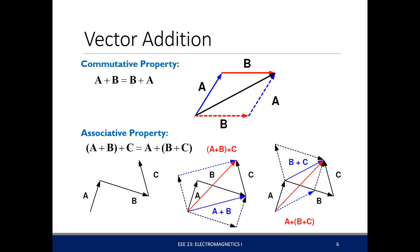The properties of vector addition are similar to scalar addition. The commutative property says that if you switch the order of the vectors, the result is still the same. The associative property means that grouping the addition of vectors differently doesn't change the result — whether you add A and B first then C, or B and C first then A, you get the same answer.